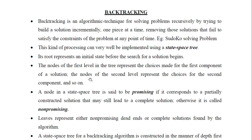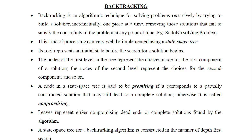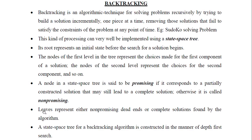The nodes can be either a promising node or a non-promising node. The promising nodes may lead to a partially constructed solution that may lead to a complete solution. All the other nodes are called non-promising nodes. The leaves of this state space tree either represent the non-promising dead end or the complete solution.